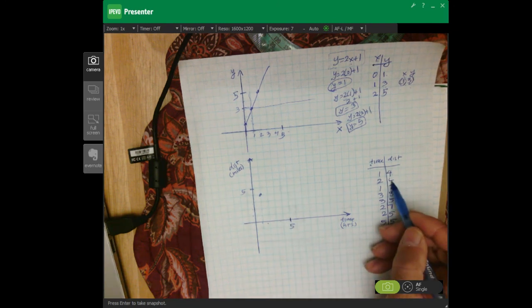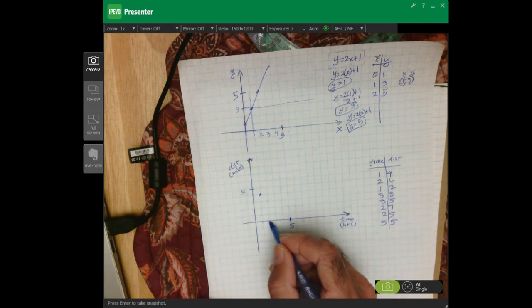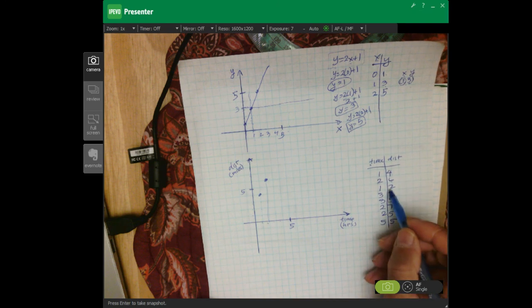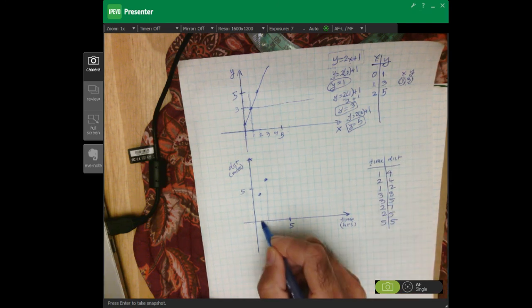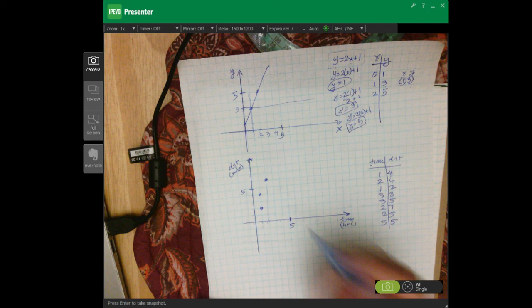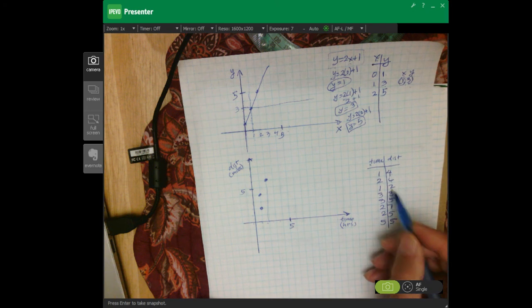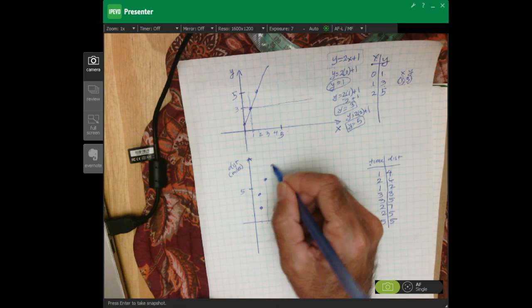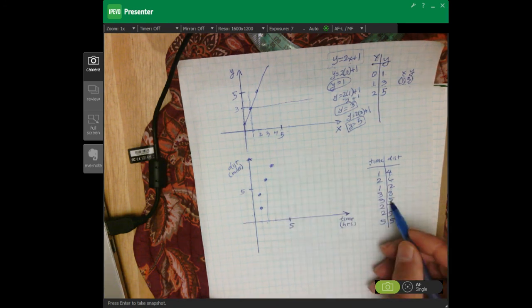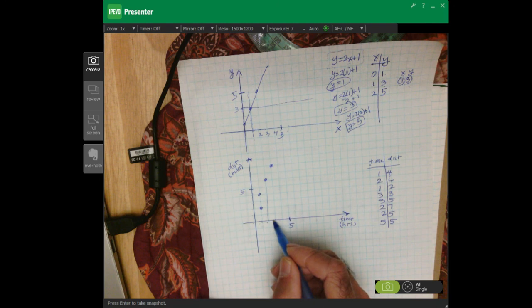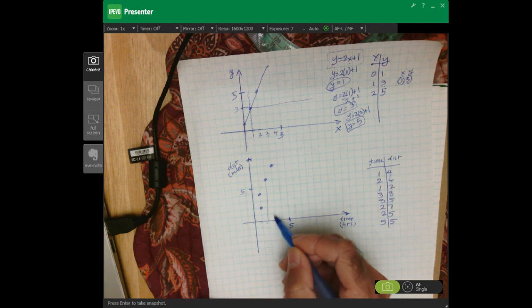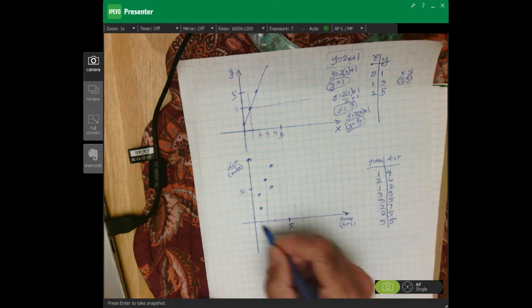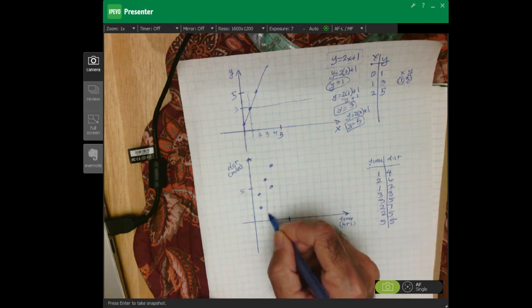The second person walked two hours, so twice as long. And they went six miles. Third person walked one hour and a little bit less than the first person, two miles. Three, eight. Three hours, five miles. So three miles. Three hours, five miles. One, two, three, four, five. Two, seven. So you just plot all the points.